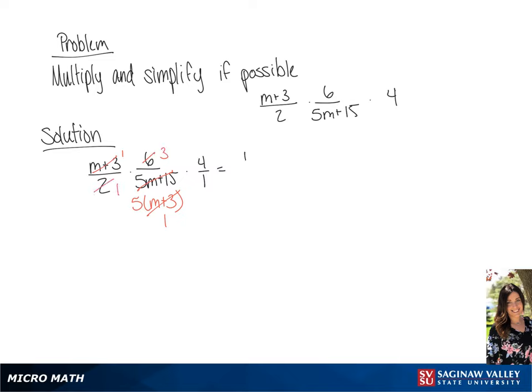This is going to give us 1 over 1, times 3 over 5, times 4 over 1, and if we multiply across, we get a final answer of 12 over 5.